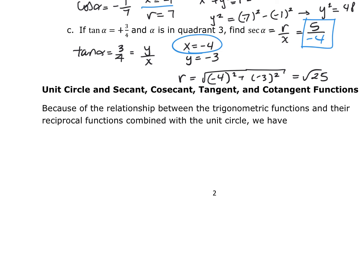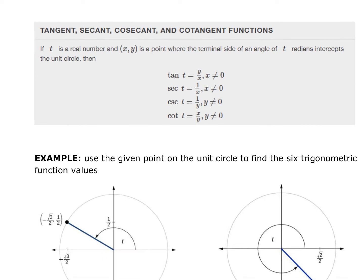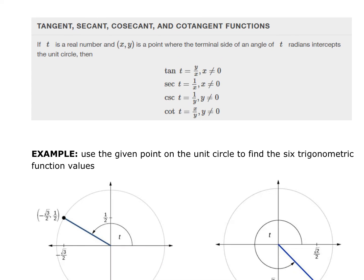On the unit circle, because radius is 1, tangent is still y/x and cotangent is still x/y. We need to pay attention when the denominator equals zero — for tangent, secant, cosecant, and cotangent, if the denominator is zero at any point, that function is undefined there. This changes the domains of those functions.